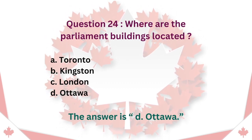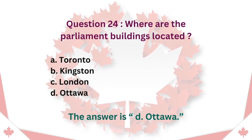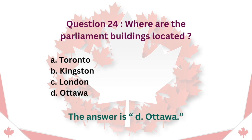Question 24: Where are the Parliament Buildings located? A. Toronto. B. Kingston. C. London. D. Ottawa. The answer is D. Ottawa.